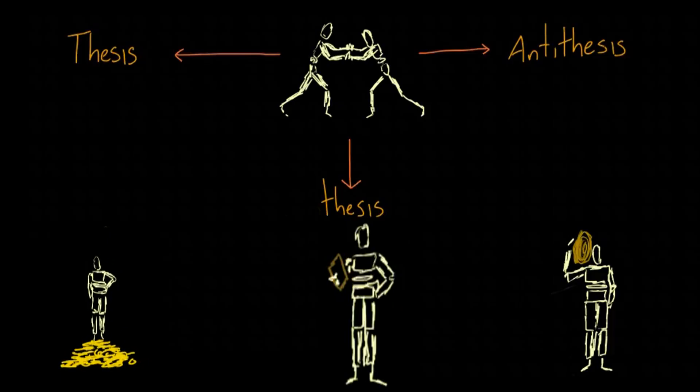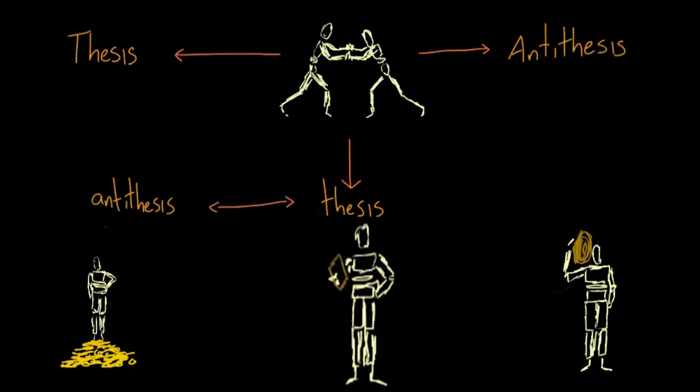The middle class is quite happy with their newfound status, but the bourgeoisie doesn't want to share. The strong influence of the middle class over everyone else has become the new thesis, and the bourgeoisie wants that to change, creating an antithesis.